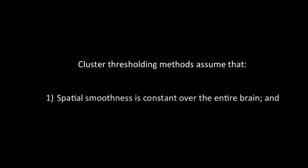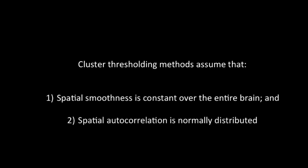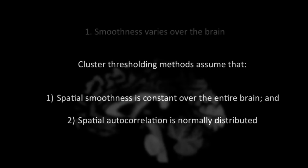There are two main assumptions with cluster thresholding that are flawed. One is that spatial smoothness is constant over the entire brain. And second, that spatial autocorrelation is normally distributed. First, spatial smoothness actually varies over the brain — it's not constant — and it's much higher in areas like the rostral anterior cingulate cortex, the retrosplenial cortex, and the precuneus.